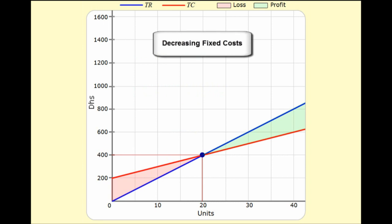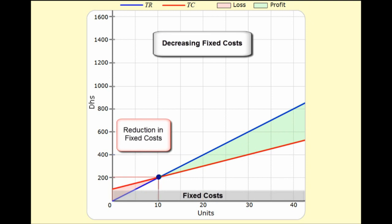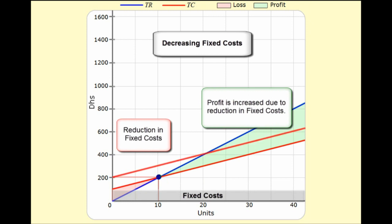Let's take a closer look at what break-even analysis is telling us. Suppose the management develops a new process, layout, or selection of new equipment that reduces fixed costs for the company. Profit is increased by the amount of savings on the fixed costs. On the break-even chart, a reduced fixed cost lowers the total cost line, which results in increased profits to the company.